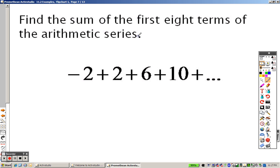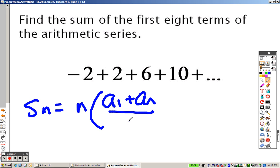Sum formula now. Find the sum of the first eight terms. Well, here's the sum formula. The sum formula for the arithmetic ones is N times A sub 1 plus A sub N over 2, I believe. Because you're finding the average.